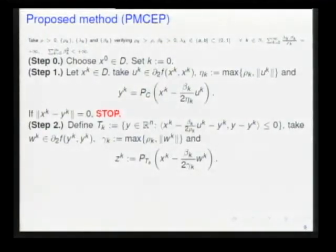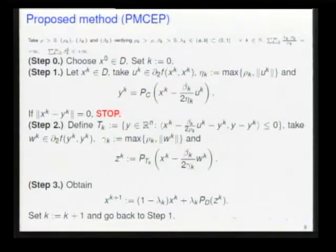Then we define a similar half-space bounded by a hyperplane. We take another subgradient at the new point. We use the divergent series step size rule. We can assume rho_k is a constant. The projection in the half-space gives us x^{k+1}, the new iteration under a projection on the set D.